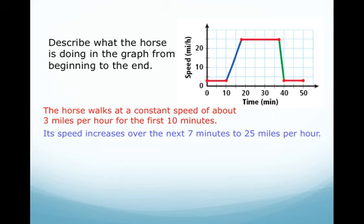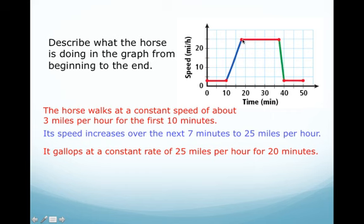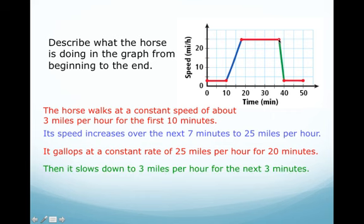That means it started at 3, it ended at 25 miles per hour. This next line again means that the horse is running or galloping at a constant rate of 25 miles per hour, and it goes for about from 17 minutes to about 37, so for about 20 minutes. The green line represents the horse slowing down.